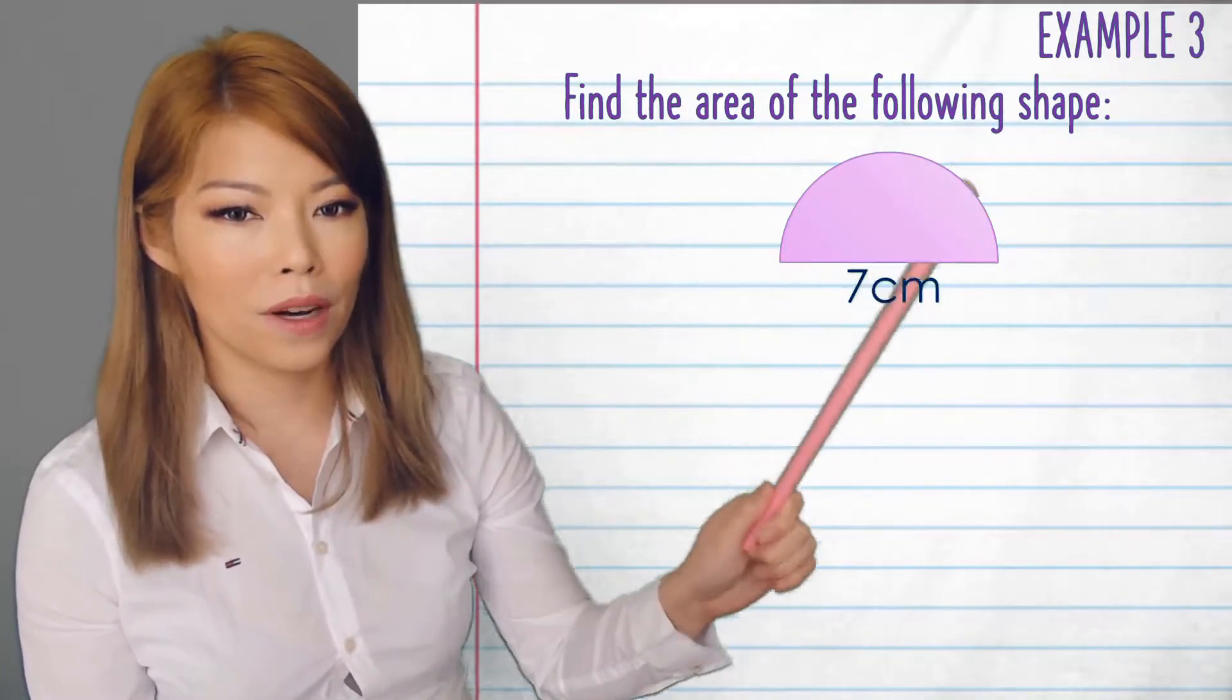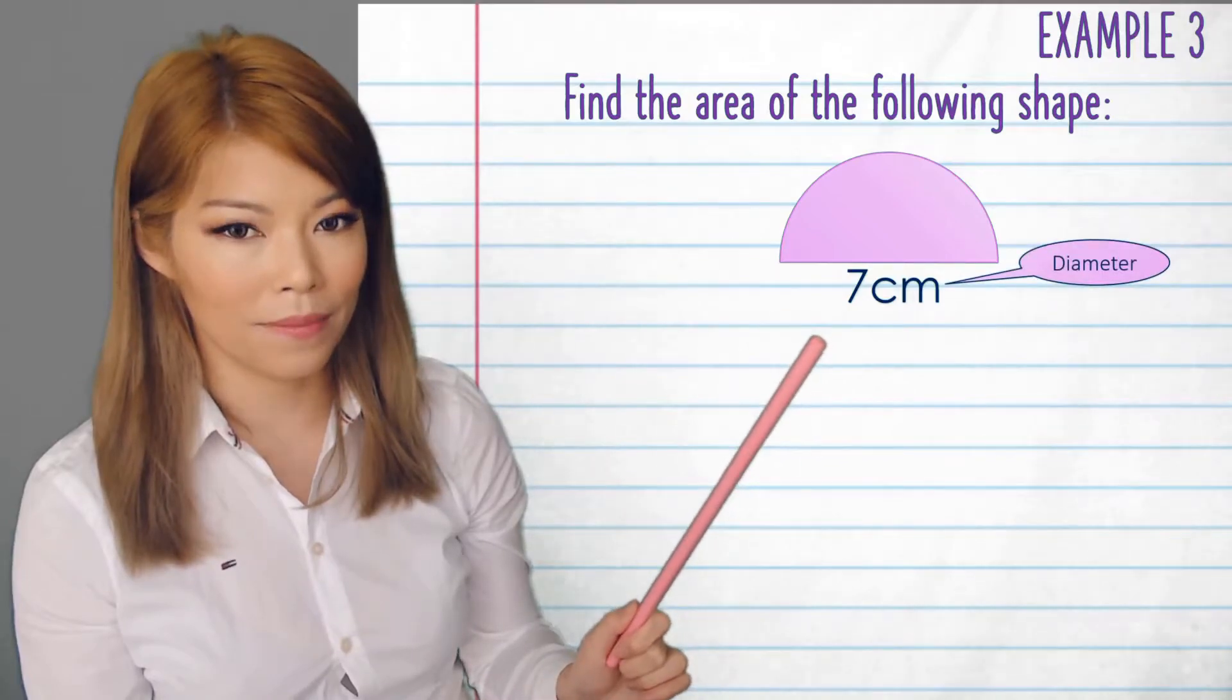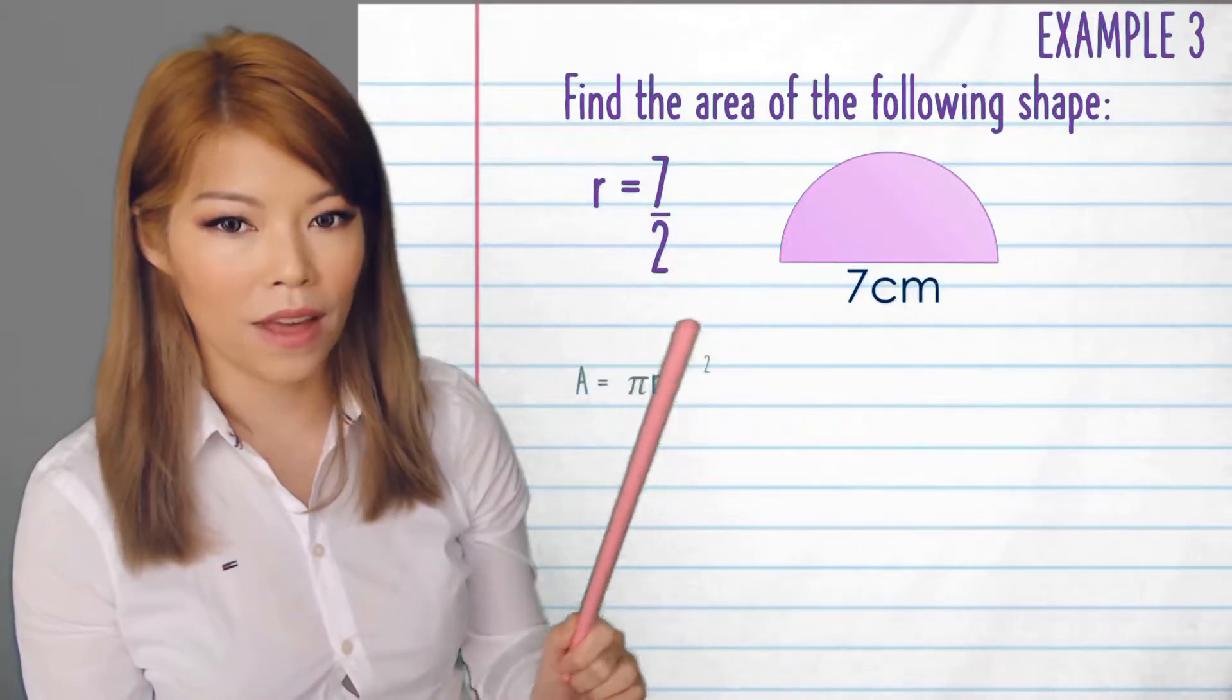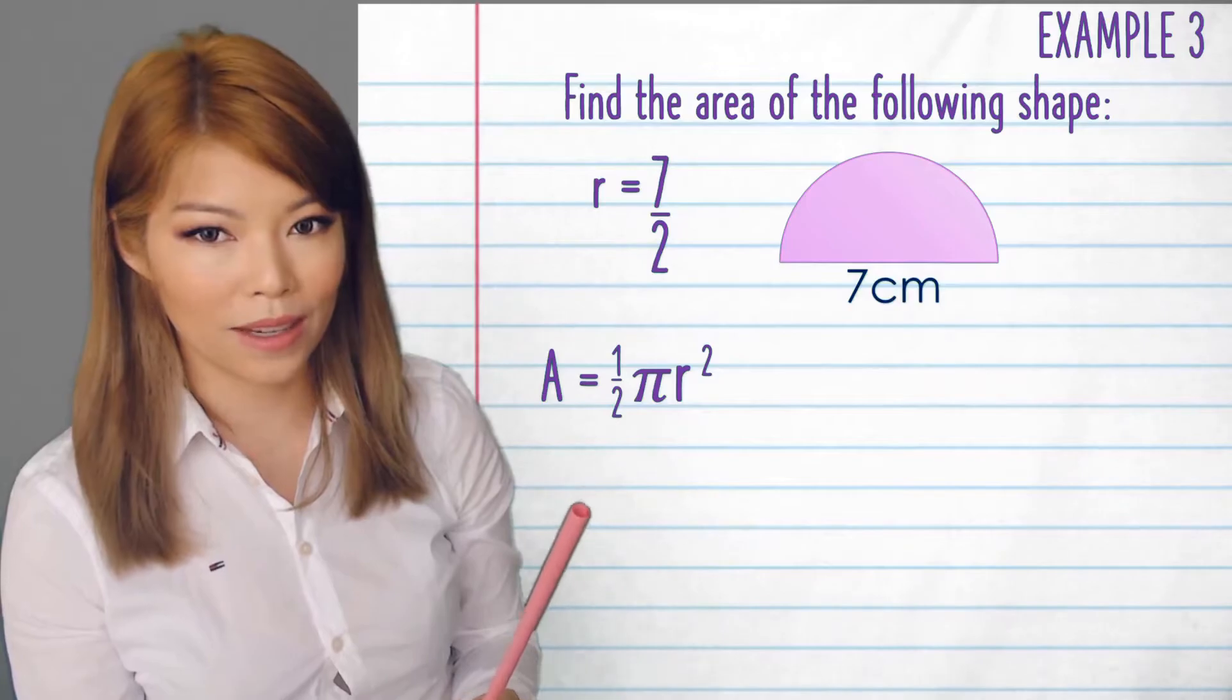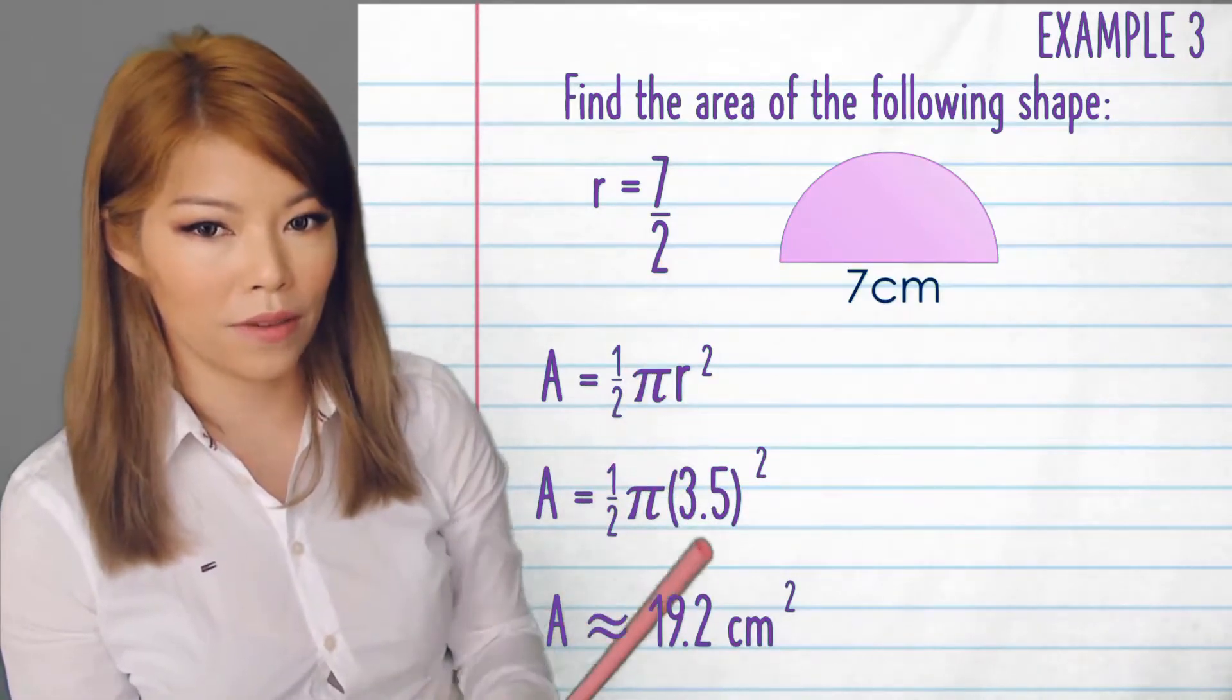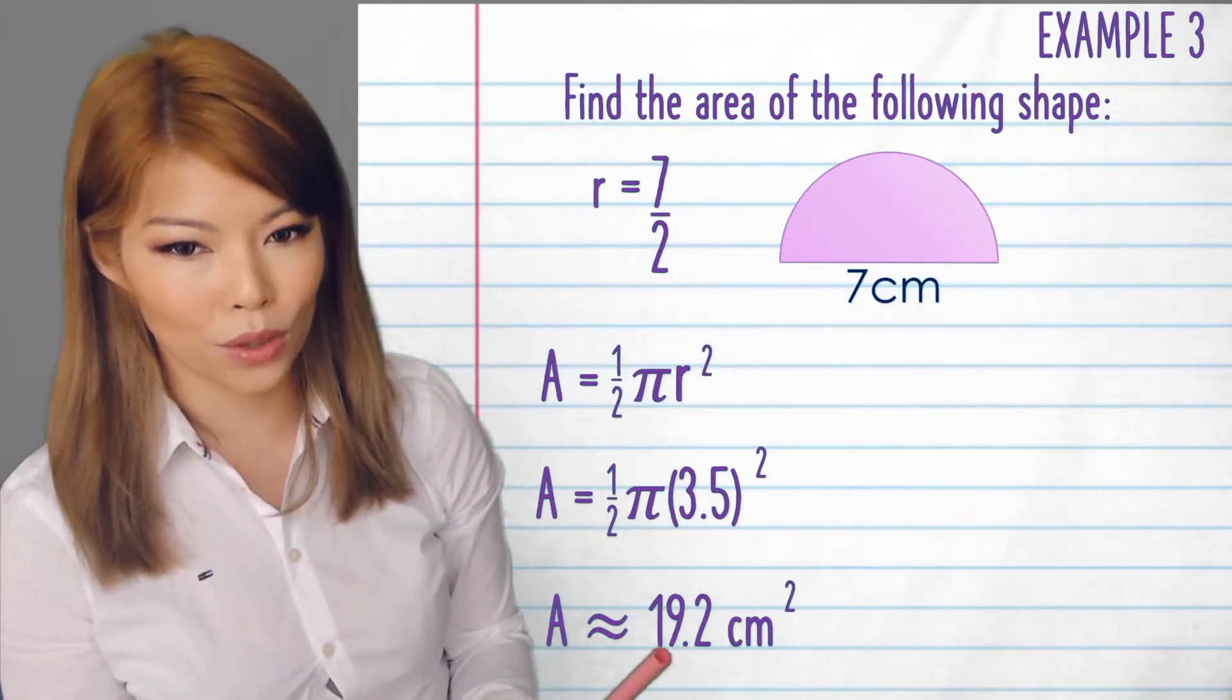Example 3, find the area of the following shape. This time we have half a circle and the diameter. So first of all, we have to make sure we use r. So r is half of that. Then the area is pi r squared. Half the area would be half pi r squared. So now we have pi times 3.5, 7 divided by 2, squared. Put it in the calculator, we get 19.2 centimeters squared.